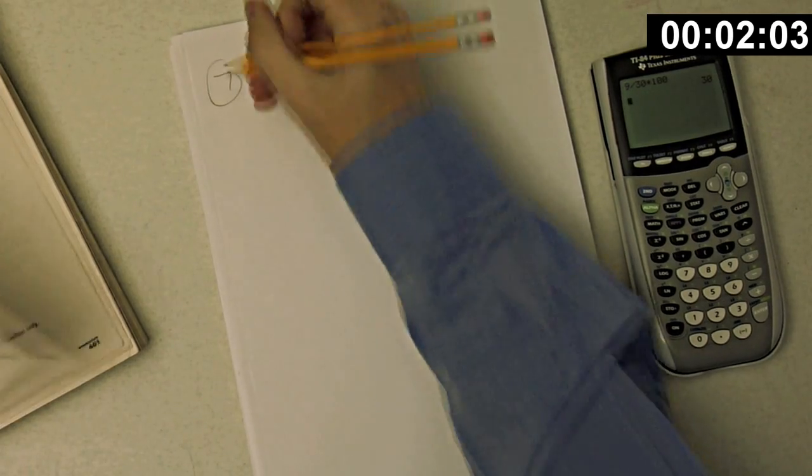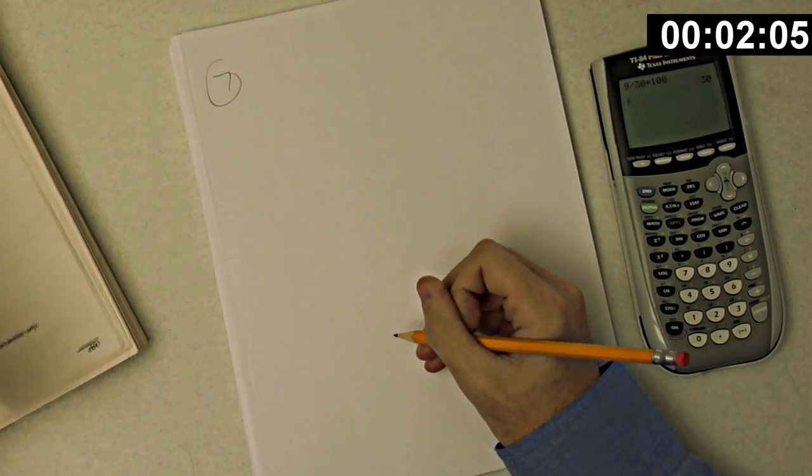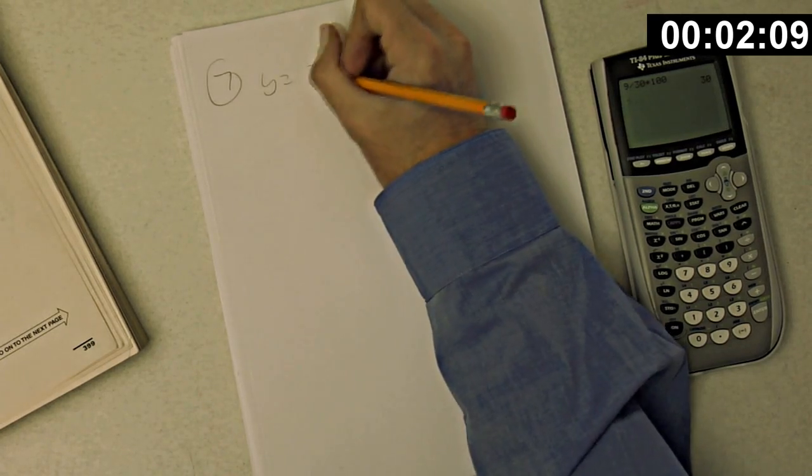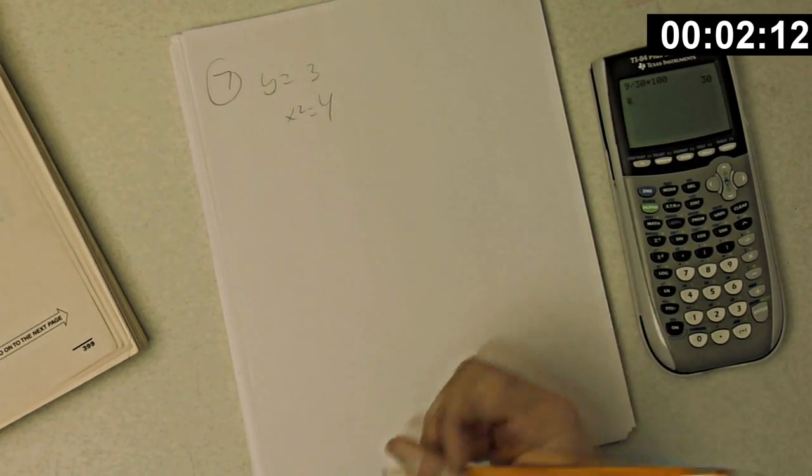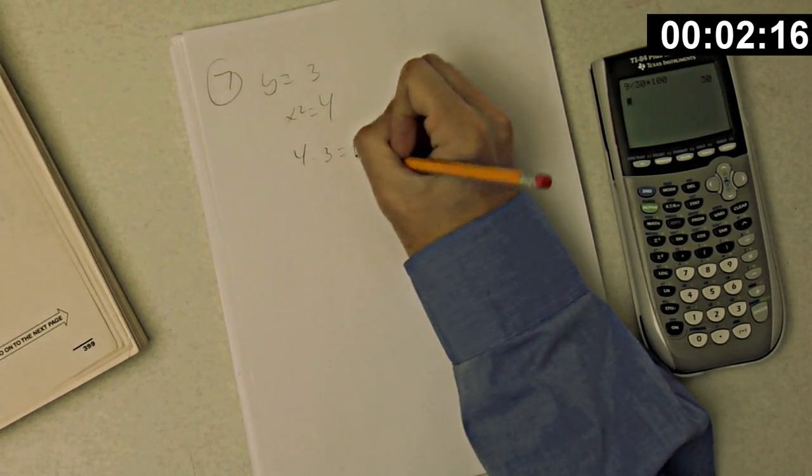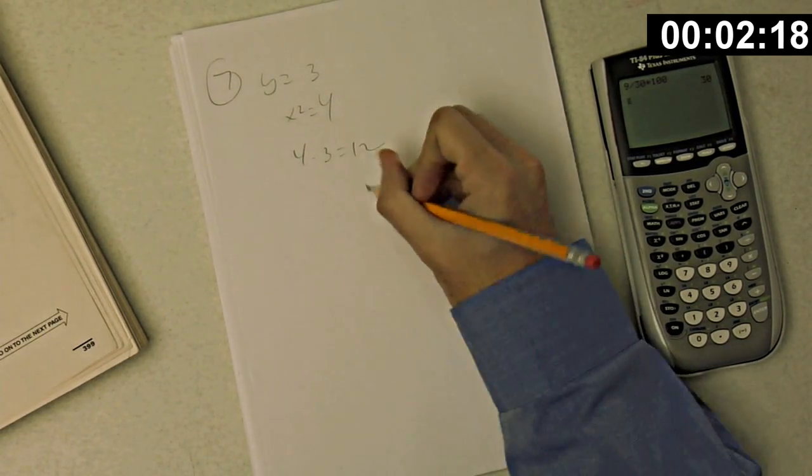Okay, number seven. If 3x squared equals 4y equals 12, so y is 3, x squared is 4. What is the value of x squared y? So we don't have to find x. It's just 4 times 3 is 12, which is choice D.